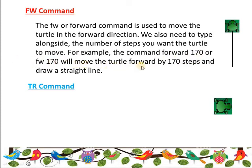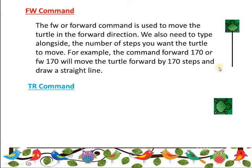Forward 170 will move the turtle forward by 170 steps and draw a straight line. If you can see here in this picture, the turtle is moving forward after drawing a line. You need to type fw, then a space, and then mention the number of steps. Suppose if I want to write fw space 100, the turtle will move forward 100 steps.